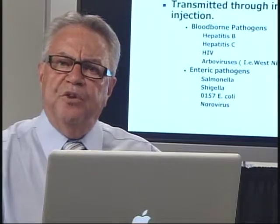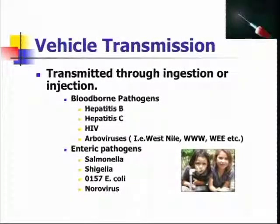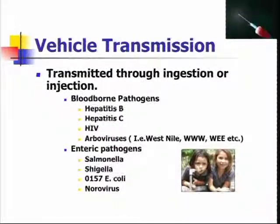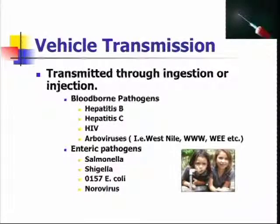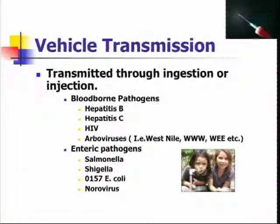Vehicle transmission involves things that are generally ingested or injected into the body, and both commonly occur in a long-term care facility. Bloodborne pathogens such as hepatitis B and hepatitis C in particular are transmitted by unsafe injection practices in healthcare facilities, with HIV and other viruses much less likely. Enteric pathogens are fairly common because people often eat in a communal setting, and bowel incontinence can easily transmit a foodborne disease. Every year we see E. coli O157, salmonella, and shigella outbreaks in long-term care.